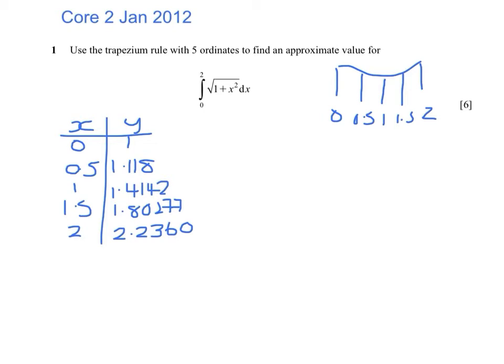The trapezium formula is in your formula booklet. It's 1 half times h, which is 1 half the step, times first plus last y value, plus 2 times the sum of the ones in between. So that's 1.18, 1.4142, and 1.80277.